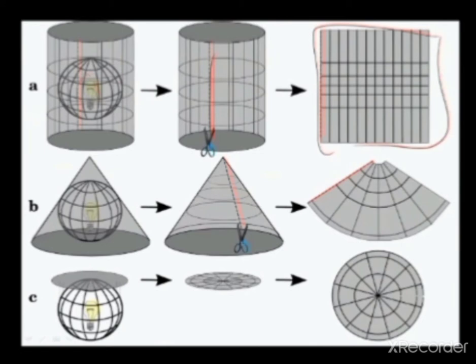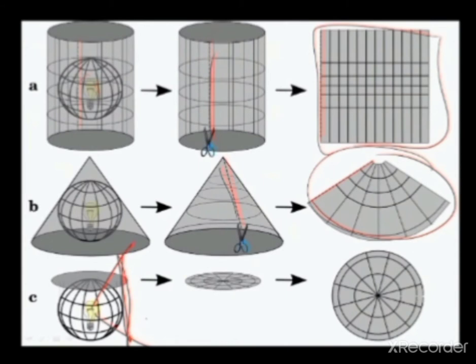In a cone, you place a bulb, you open the cone, and that is your conic projection. In azimuthal, you have a bulb, you place a piece of paper here, and the shadows that it would cast on the paper — that would be your azimuthal projection.